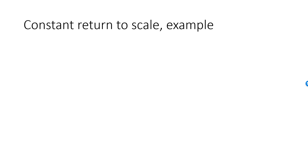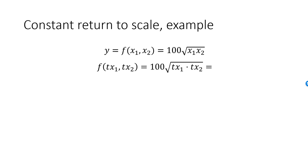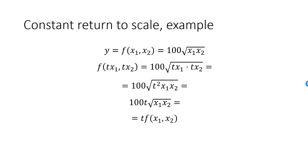Let's look at some examples of return to scale. In my first example, the production function is 100 times the square root of x1 times x2. To find the new level of production f of (tx1, tx2), we replace x1 with tx1 and x2 with tx2, giving 100 times the square root of tx1 multiplied by tx2. Since tx1 times tx2 equals t squared times x1 times x2, we can take t squared outside the square root: 100t times the square root of x1 times x2. This equals t times f of x1, x2, proving that this production function displays constant return to scale. If you double all production factors, output doubles; if you triple them, output triples.